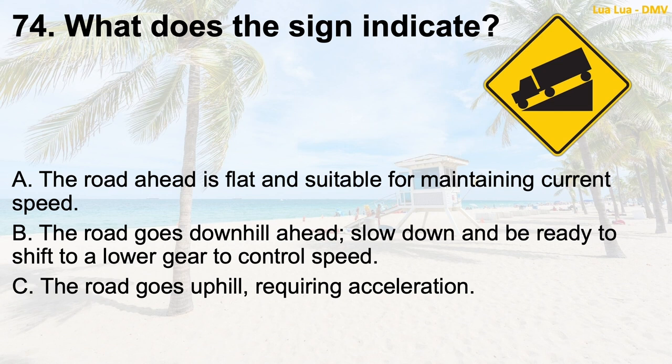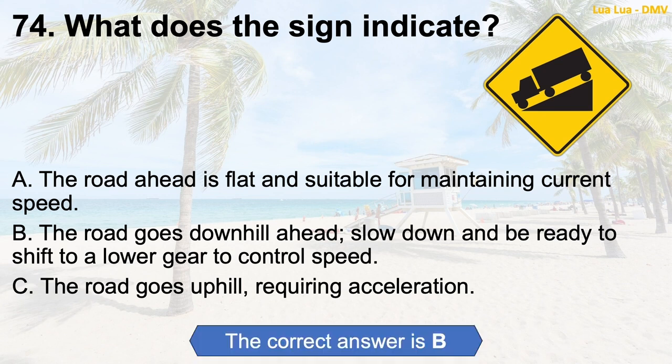Question 74: What does the sign indicate? A. The road ahead is flat and suitable for maintaining current speed. B. The road goes downhill ahead — slow down and be ready to shift to a lower gear to control speed. C. The road goes uphill, requiring acceleration. The correct answer is B: The road goes downhill ahead — slow down and be ready to shift to a lower gear to control speed.